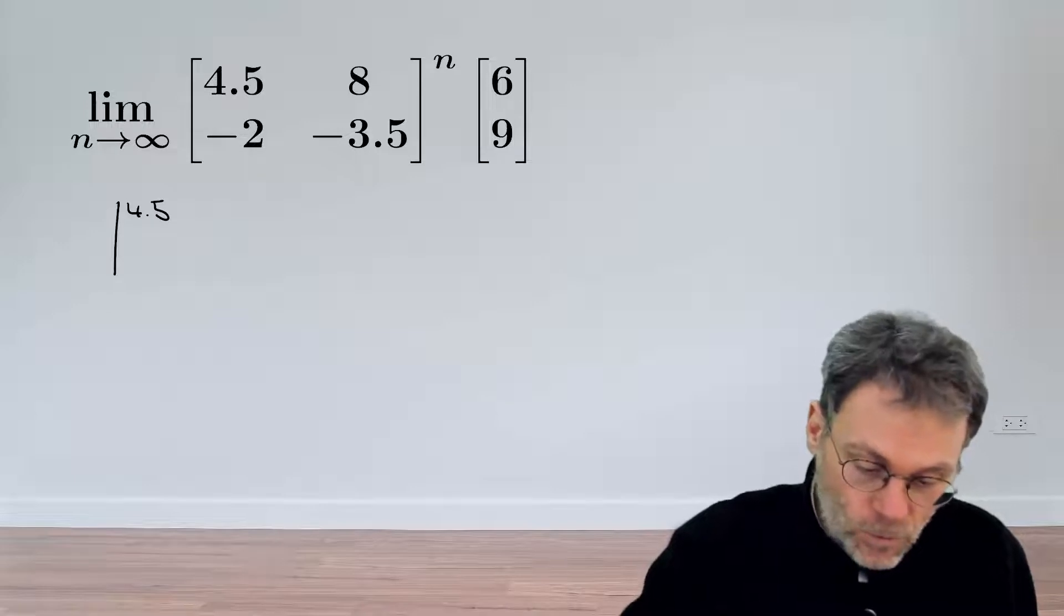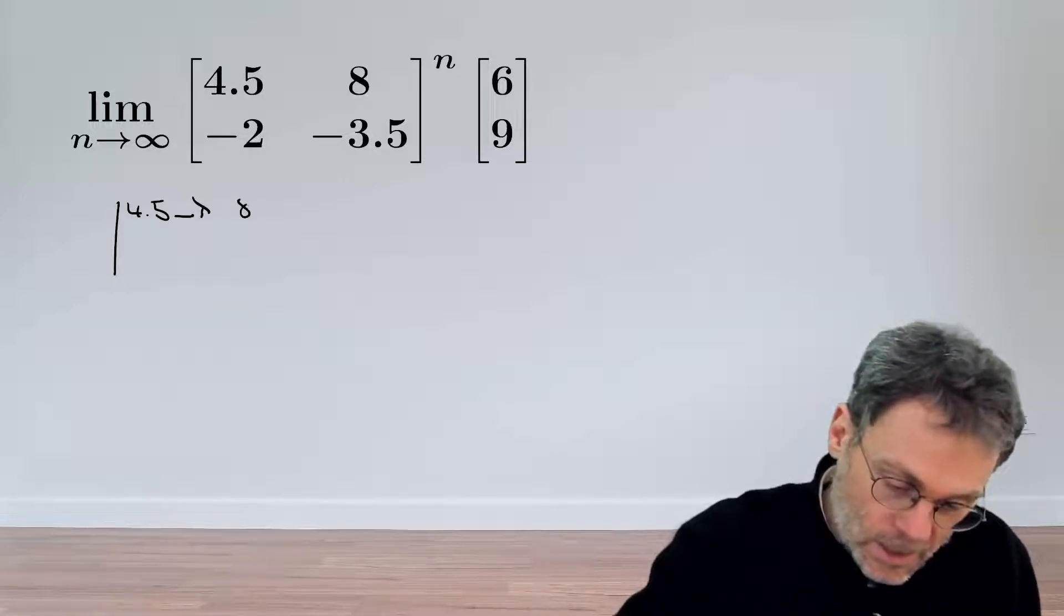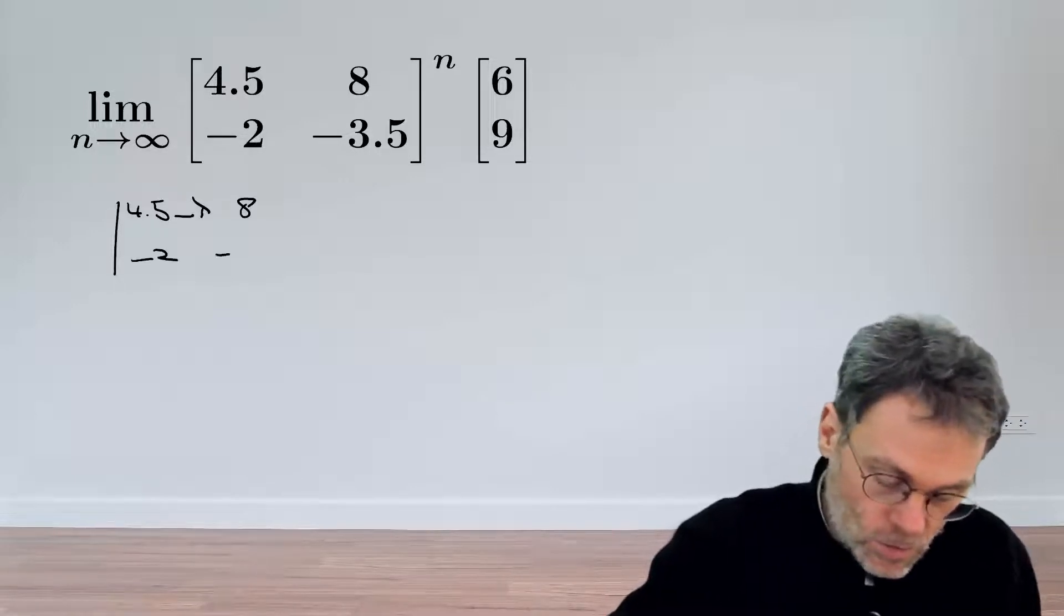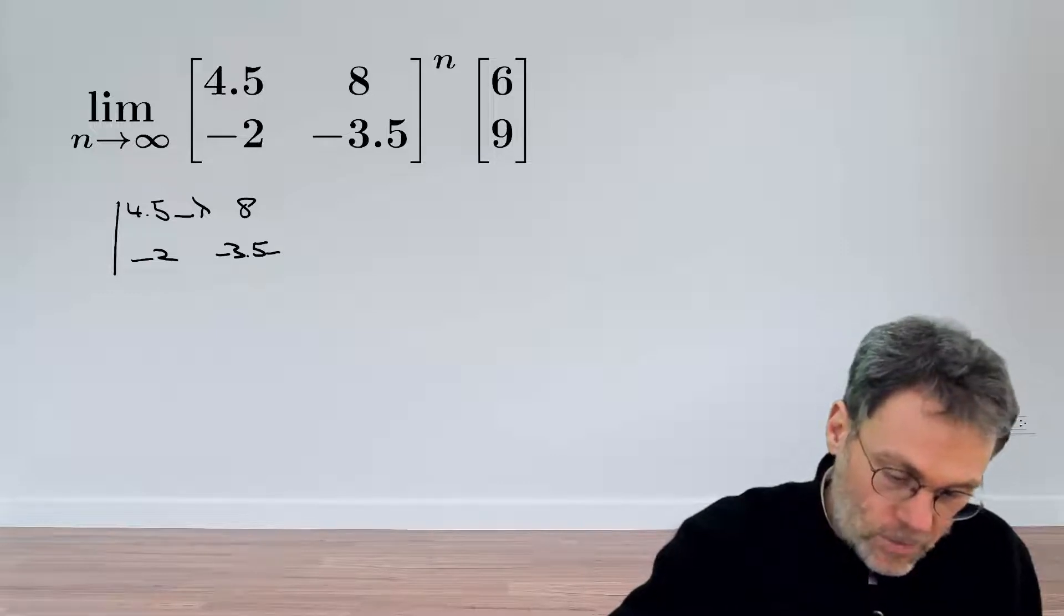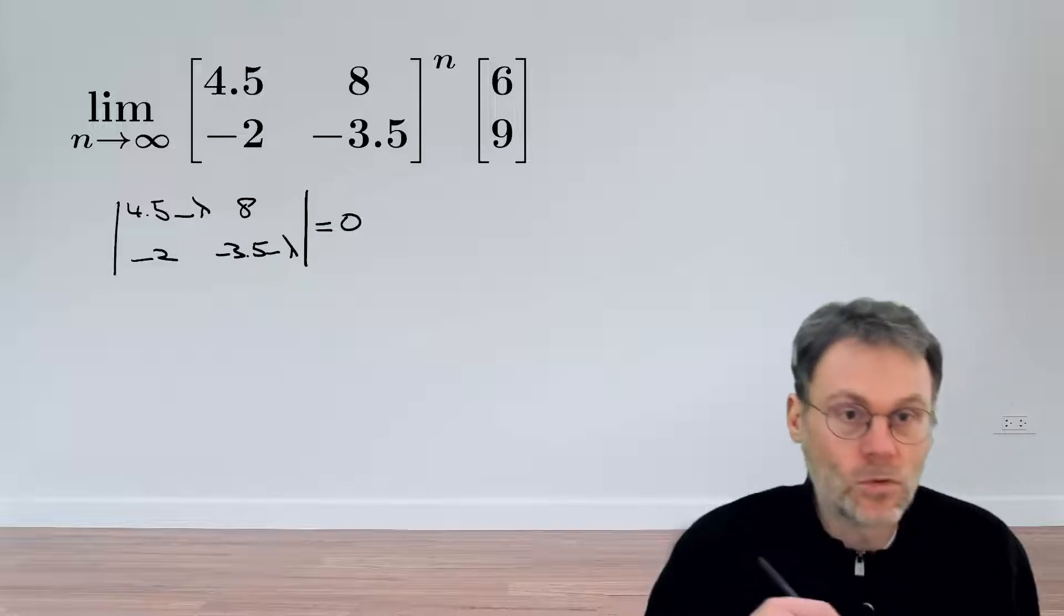So that's going to be 4.5 minus λ, 8, minus 2, minus 3.5 minus λ, and that should be equal to 0.